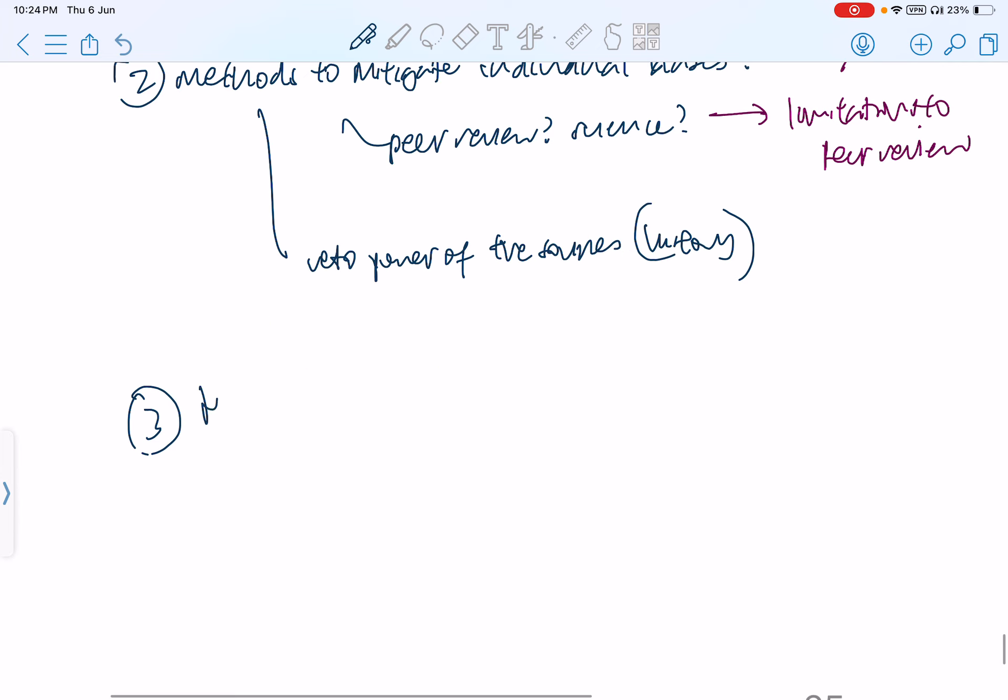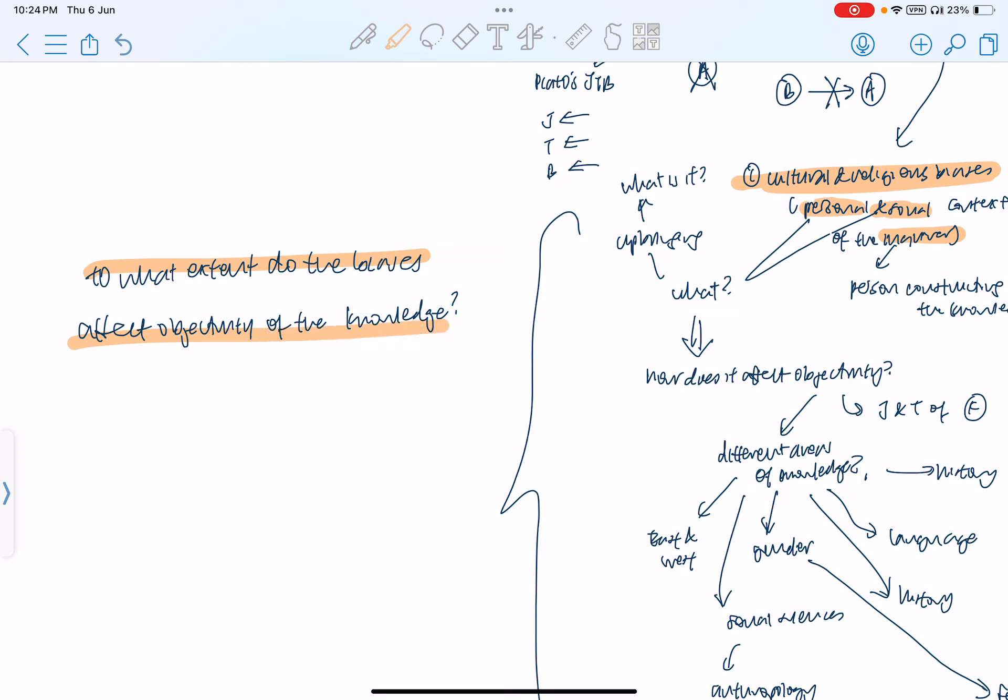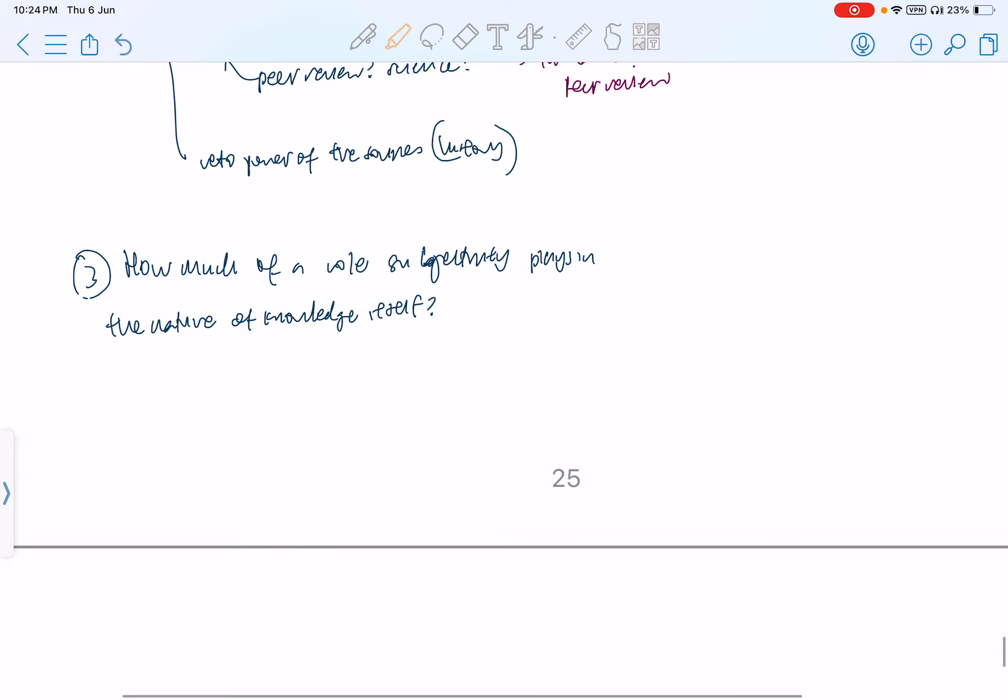Okay. So, we have to think of methods to mitigate individual biases. And now, let's move on to the third point, which is, how much of a role subjectivity plays in the nature of knowledge itself? So, remember what I said, I think, about two minutes ago? I did say that, up here, to what extent do the biases affect objectivity of the knowledge? For some, it might not even affect, per se. Biases may actually enhance the quality and the nature of the knowledge constructed, because subjectivity does play a role in the nature of knowledge itself.